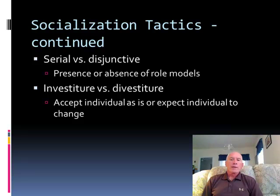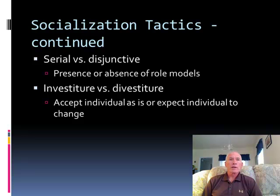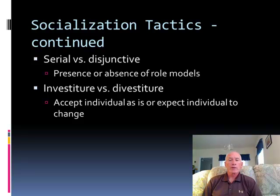We also look at whether the socialization tactic is serial or disjunctive — essentially whether there is a presence or absence of a role model. Serial tactics involve the organization taking particular individuals and presenting them as models to emulate. We typically do this in policing, though perhaps not always with a process that helps us make the best choices. Think about who we choose to be our trainers in basic recruit training, who we choose to be our field training officers — those are some of the most critical personnel decisions in a police organization, because those individuals are typically the first role models new members encounter.